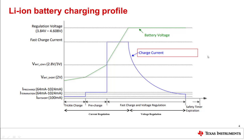This slide shows the lithium-ion battery charging profile. The green curve shows the battery voltage and the blue curve shows the charge current during a battery charging cycle. Some things to highlight are the pre-charge, the fast charge, and the safety timer expiration. To move from pre-charge to fast charge, the battery voltage needs to cross a certain threshold — in this example, 2.8 volts or 3 volts — and there is also a safety timer expiration for the whole charge itself.